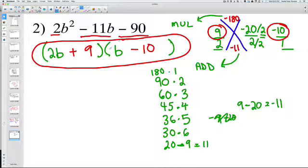You could go ahead and multiply it out using the FOIL method to check your answer and make sure it's correct.